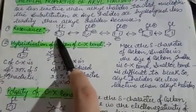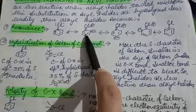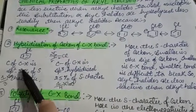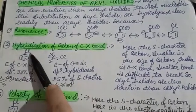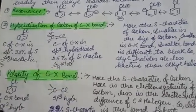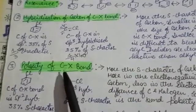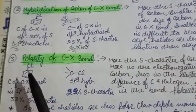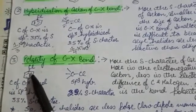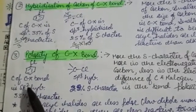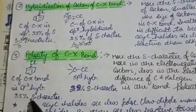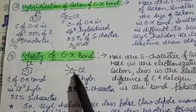Third reason is the polarity of carbon-halogen bond. Look, if I talk about aryl halide, then SP2 hybridization and the percentage S character is 33%. If I talk about alkyl halide, then SP3 hybridization.